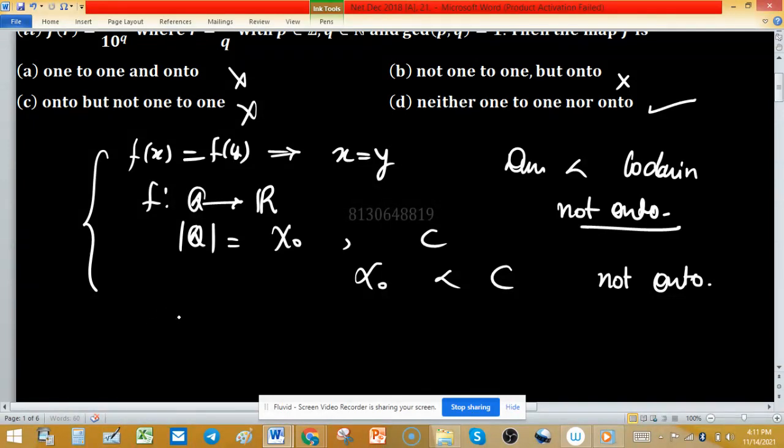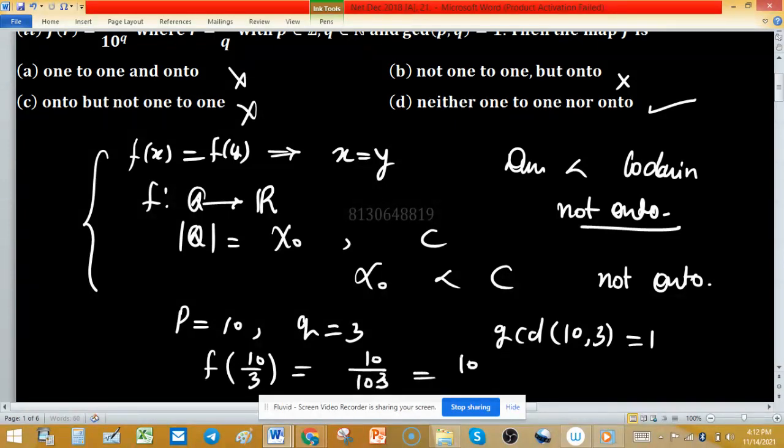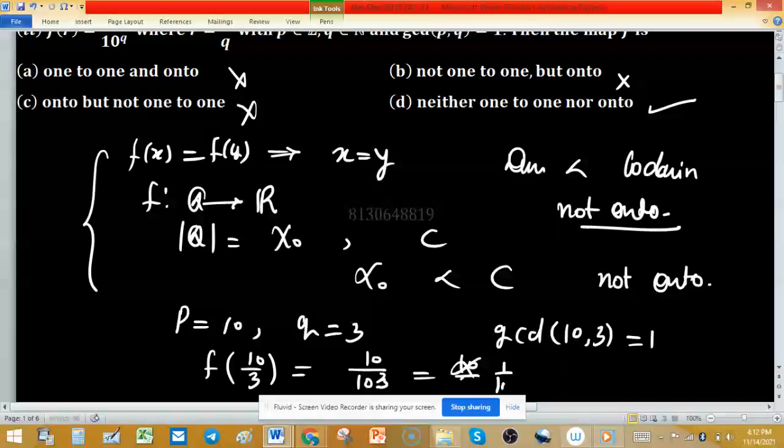For this we consider value of p is 10 and value of q is 3. Then gcd of 10 comma 3 will be 1, means these two are coprime. And f(10/3) will equal to 10 upon 10 cubed, and this one equal to 1 upon 10 squared.